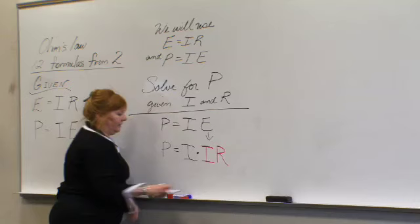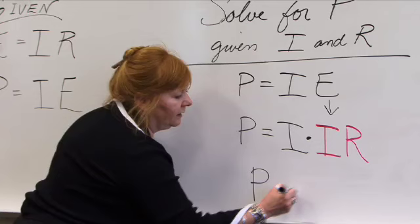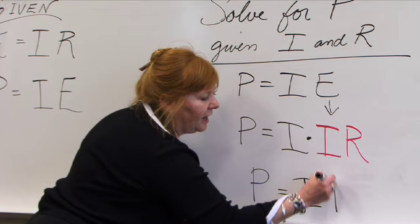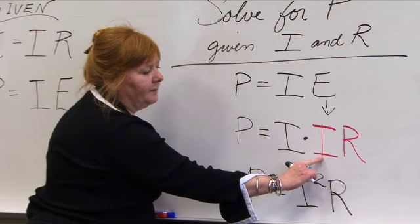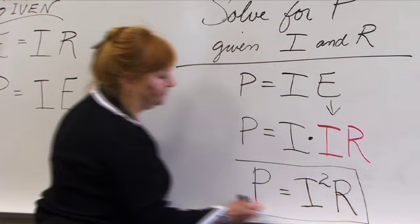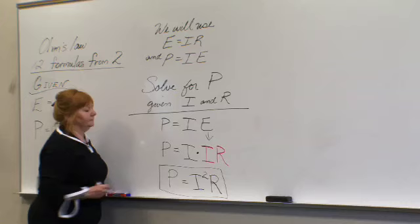And if we do this, this simplifies into P equaling I times I is I squared times R. Remember, this is straight multiplication here. And when we have something times itself, we can write it as a square with an exponent. Another formula from that pie wheel.